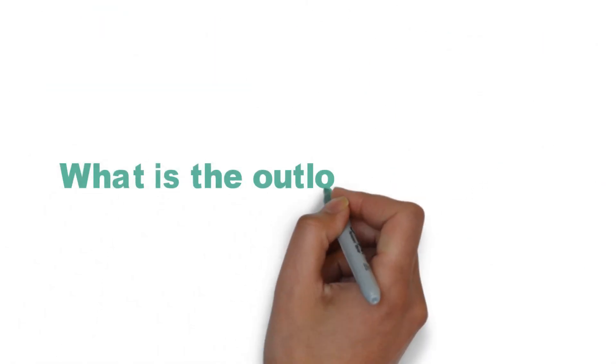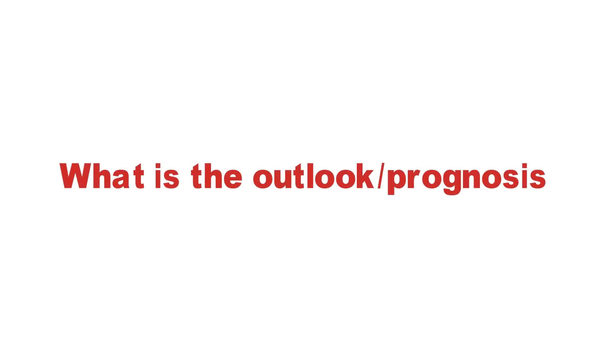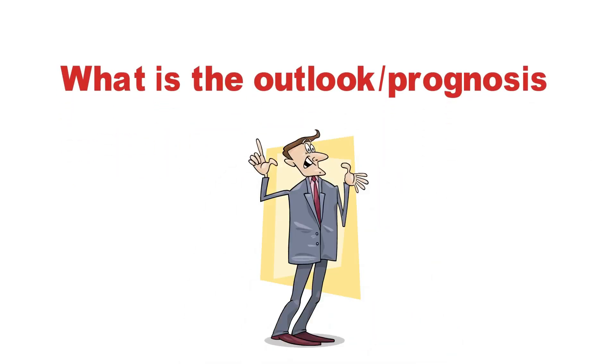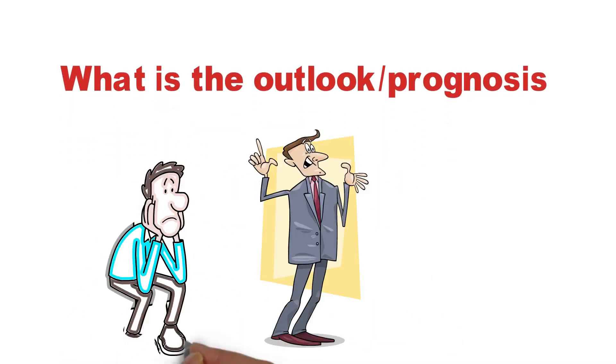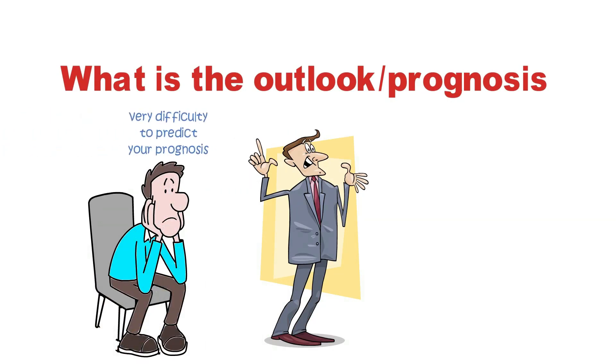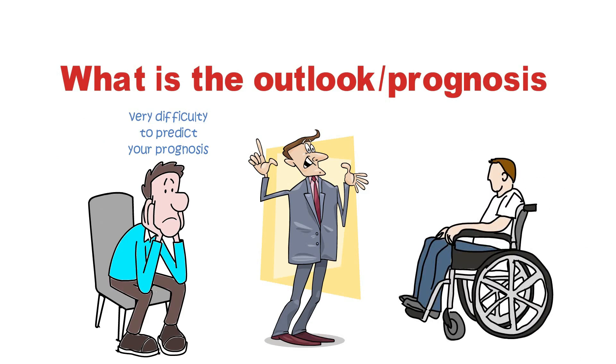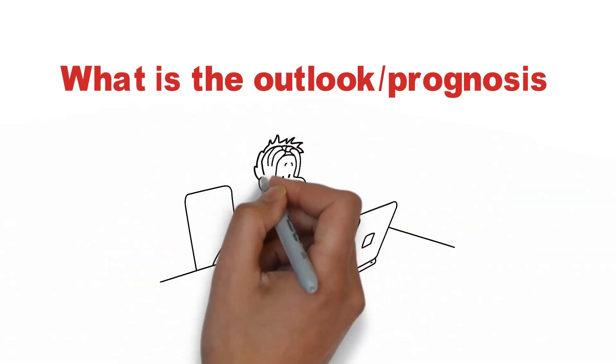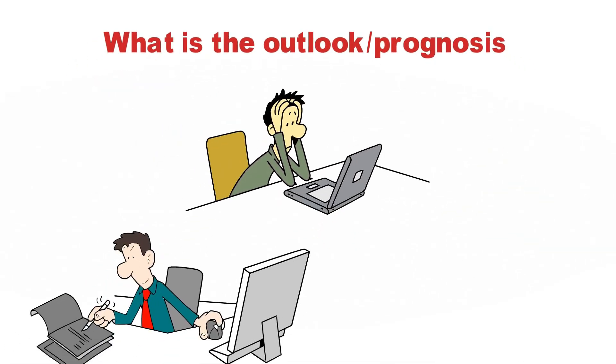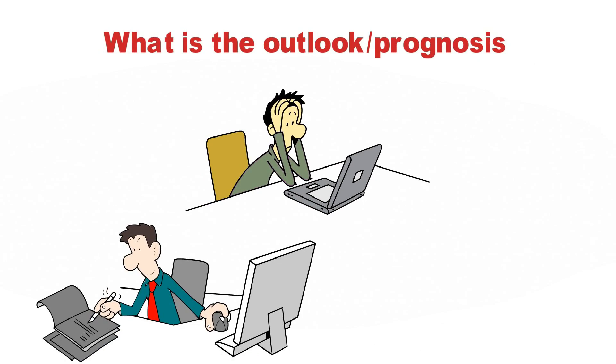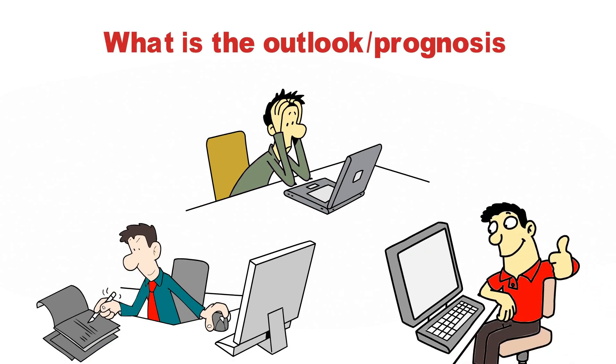What is the outlook or prognosis? MS is not the same for everyone. Each individual will be affected in different ways and as a result it is very difficult to predict your prognosis. Many people will be able to function normally for many years whilst some will become disabled over time. Even though there is currently no cure for MS, intensive research is being done to produce better drugs and hopefully a cure at some point in the near future.